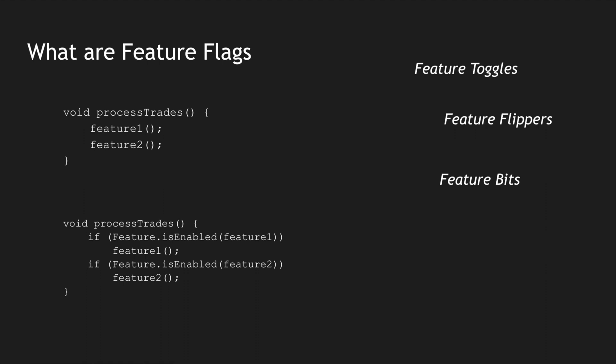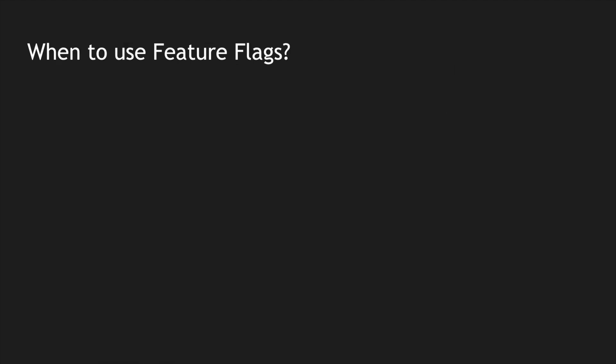So when do we use feature flags? We know they are helpful, but when do we decide to use one? The first and foremost use case is when following trunk-based development. Trunk-based development is a technique in Git, SVN, or any version control system where you always release your code from a single branch — master, main, or trunk — whichever you call it.